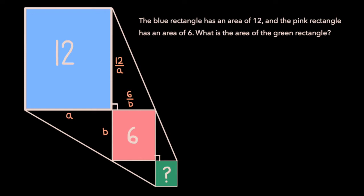Now let's assign variables to the side lengths of the green rectangle. Let's say the shorter side is of length x, and the longer side is of length y. We know the area of the green rectangle is just going to be x times y, but since we want an actual value for that area, let's see if we can write x and y in terms of a and b.